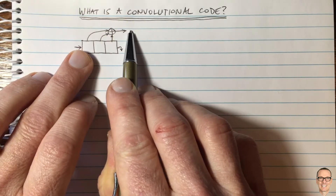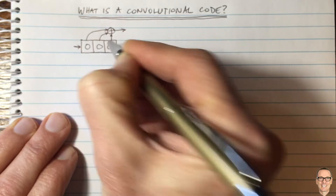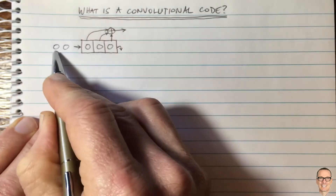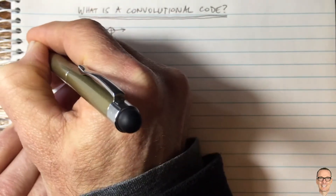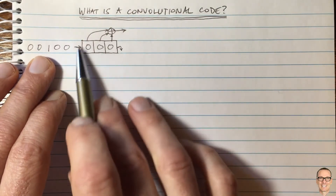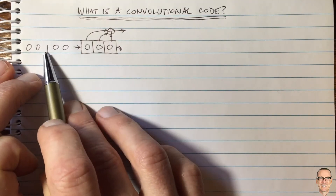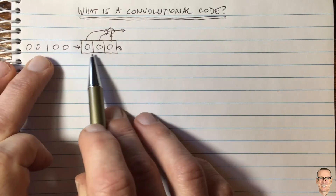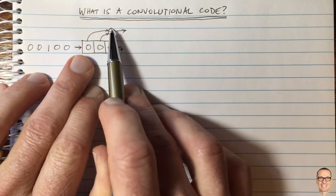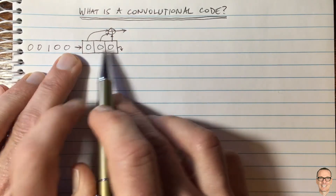Every time you clock the elements along, you produce another parity bit. Let's look at an example. We start with the shift register filled with zeros and send a digital data sequence: zero, zero, then a one, then a couple of zeros. From a signals and systems point of view, this input is a delta function — all zeros except for a one — it's an impulse. So we expect to see the impulse response, though this is not a linear system because the addition here is modulo-two.